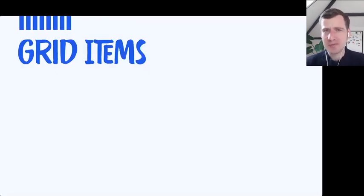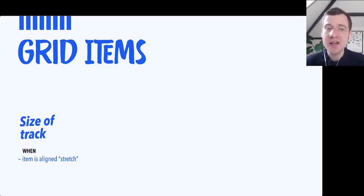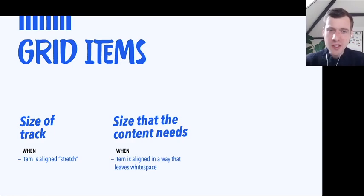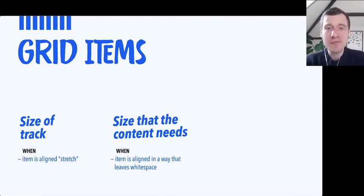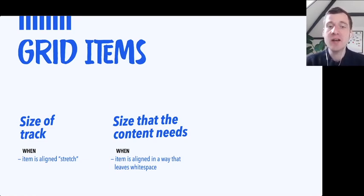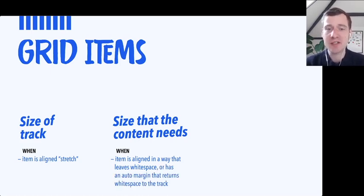So how big do grid items get? They can become the size of the track — which is the default — and that happens when an item is aligned with stretch. The item can also be as big as it needs to be for the content, and that is what happens when the item is aligned in a way that leaves white space — so when it's at the start or at the end and there's some space available, or when you use an auto margin, which also gives some white space back to the cell.